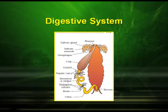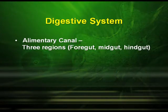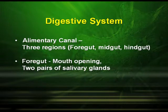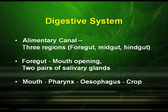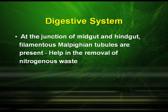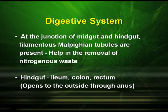Anatomy — the digestive system. The alimentary canal has three regions: the foregut, the midgut and the hindgut. The foregut includes the mouth opening with two pairs of salivary glands. The mouth leads to the pharynx, esophagus and then the crop. At the junction of midgut and hindgut, filamentous Malpighian tubules are found which help in the removal of nitrogenous waste. The hindgut includes the ileum, colon and rectum, which opens to the outside by the anus.